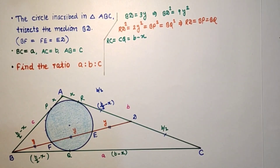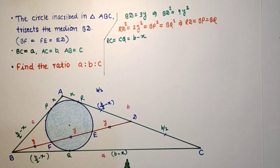Therefore BC in terms of B and X will be (B/2 minus X) plus (B minus X), which gives us 3B/2 minus 2X.